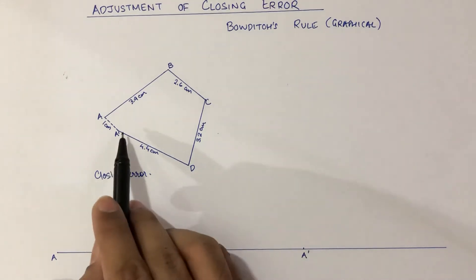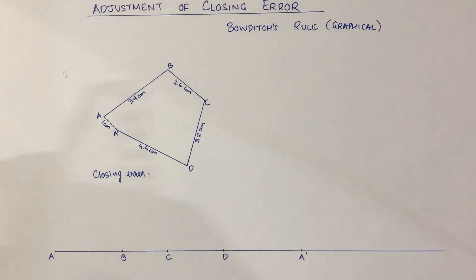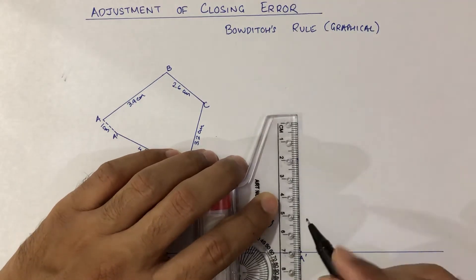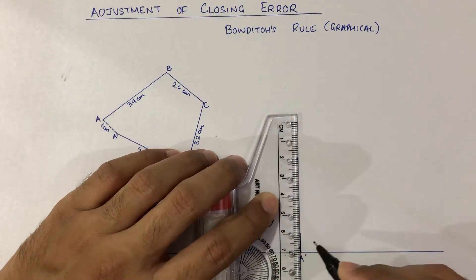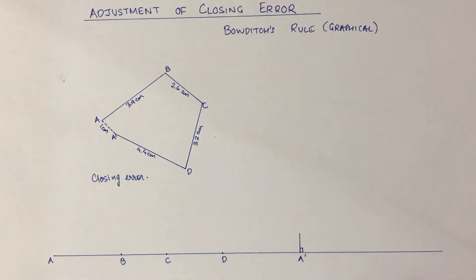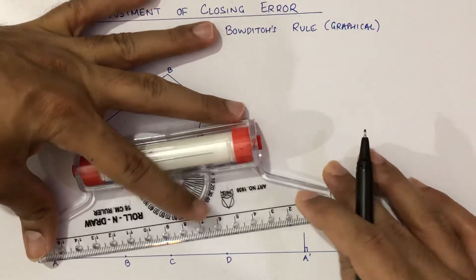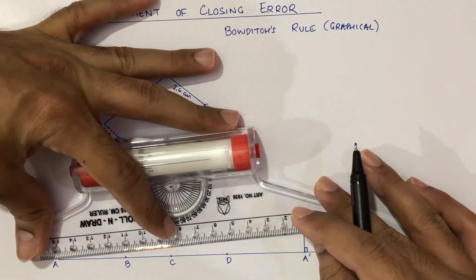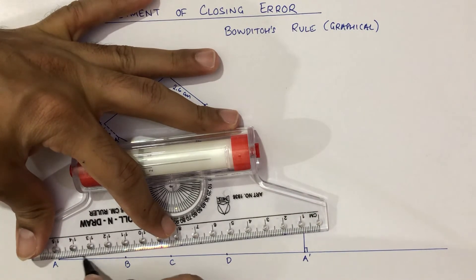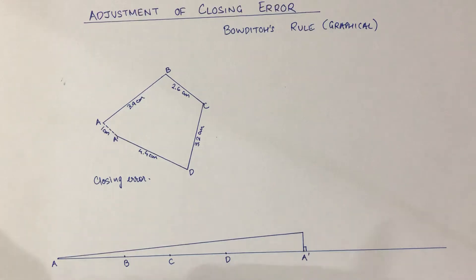The closing error AA' is given as 1 centimeter, so we raise AA' by 1 centimeter perpendicular to the given straight line. Then we connect these two points so that it forms a triangle.